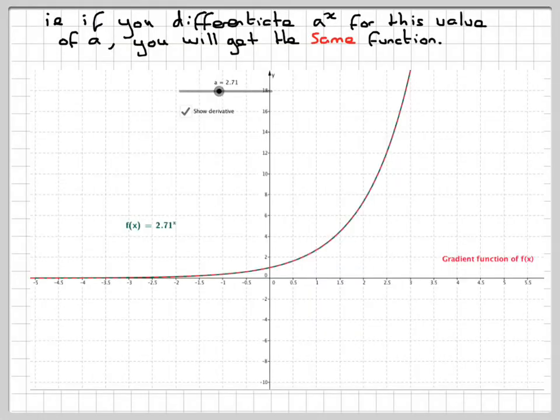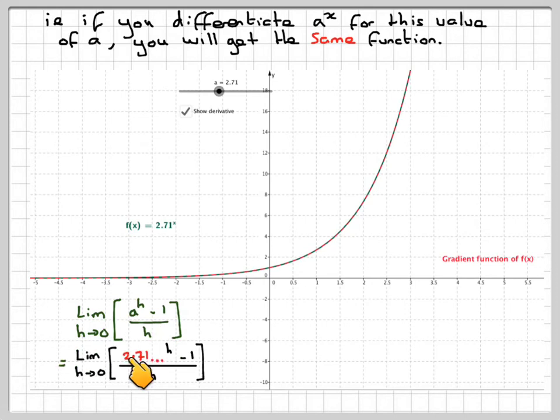So this is the limit as h goes to 0 of a to the h minus 1 over h. If I take now the limit when a is equal to 2.71 to the h minus 1 over h for a very small value of h, if you calculate it, you can check it approaches 1.